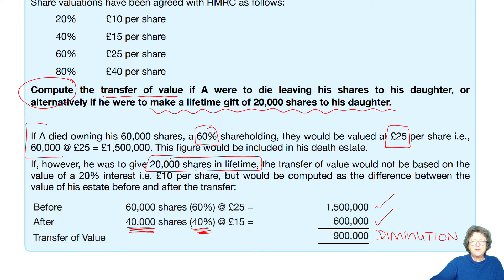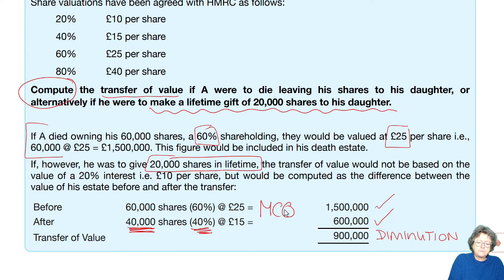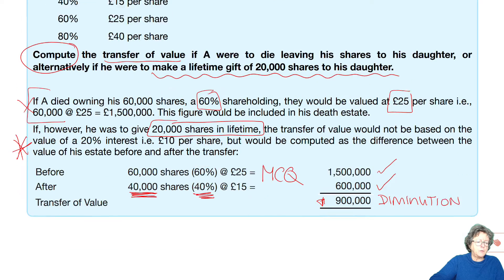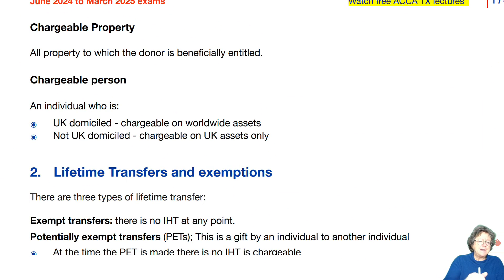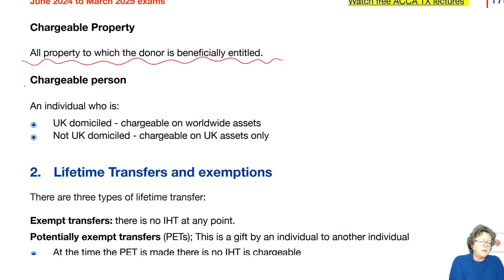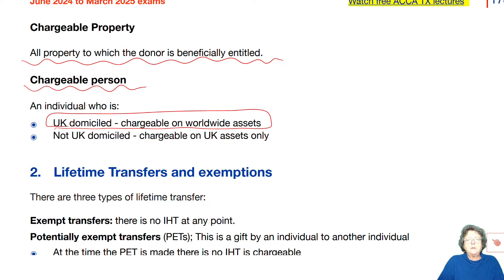In the majority of cases that you're going to get, the transfer of value will be given to you, because what they want you to do is then to work out the IHT. However, you may get one of these as a multiple choice question. A chargeable property is anything that the donor is beneficially entitled to — so anything you own, if you're giving it away, it's chargeable. Chargeable person: you're looking at UK domiciled worldwide assets. So if I'm UK domiciled and I owned assets in the UK and overseas, all of them are subject to UK inheritance tax.